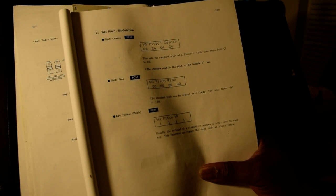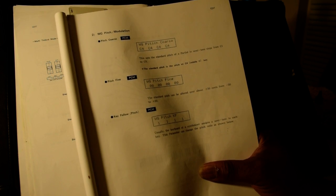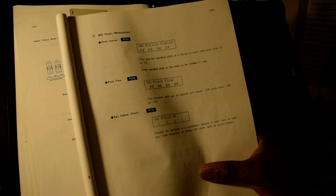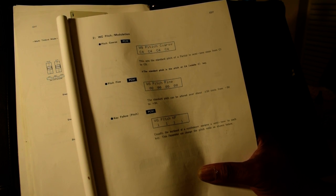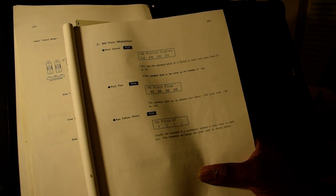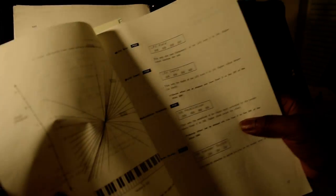The key follow, the WG pitch KF. Usually the keyboard of a synthesizer assigns a semi tone to each key. This parameter can change the pitch ratio as shown below. This is when you're really getting off into really tweaking that machine.